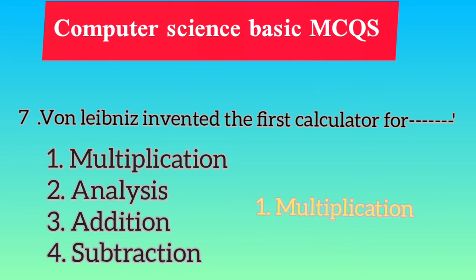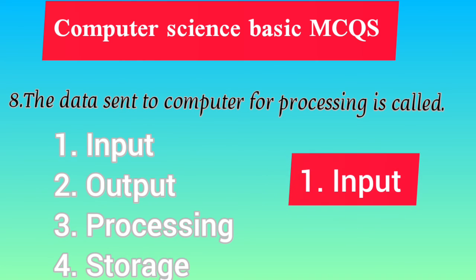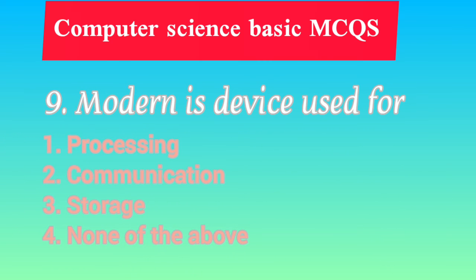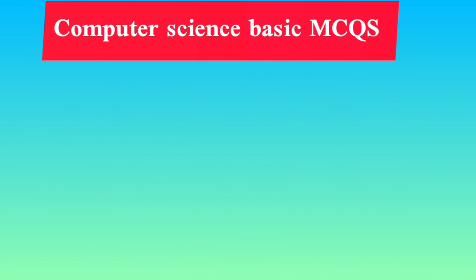Data sent to computer for processing is called: input, output, processing, storage. Answer is input. Modem is a device used for: processing, communication, storage, none of the above. Modem communication ke liye hota hai — for communication. The communication device used for connecting to the network is called: modem, NIC, Bluetooth, none of the above. The correct answer is Network Interface Card (NIC).